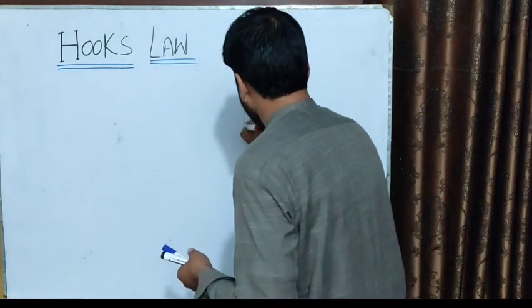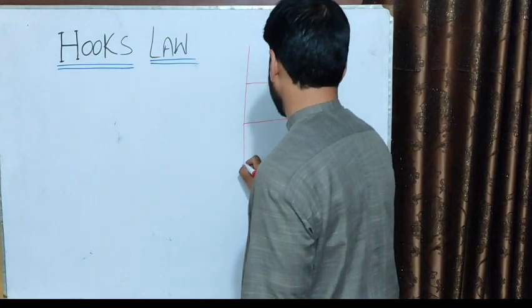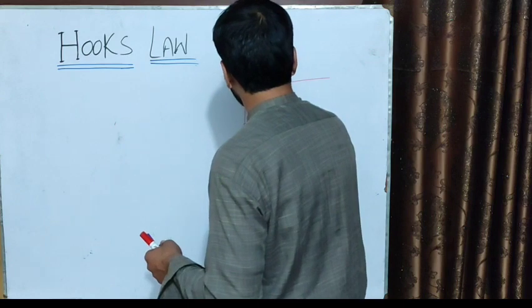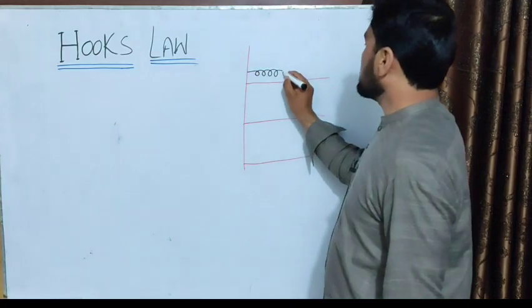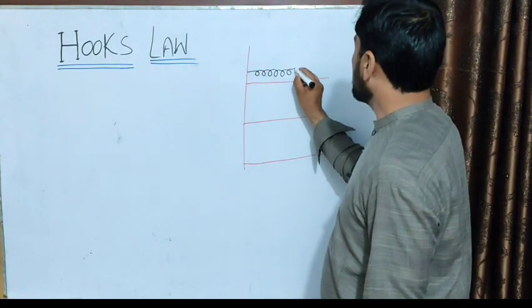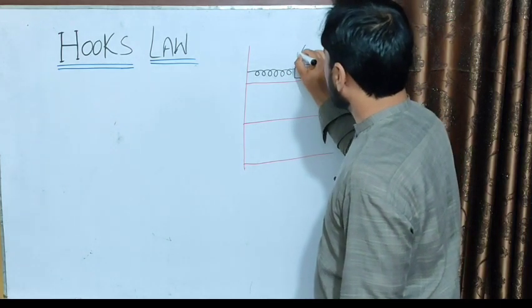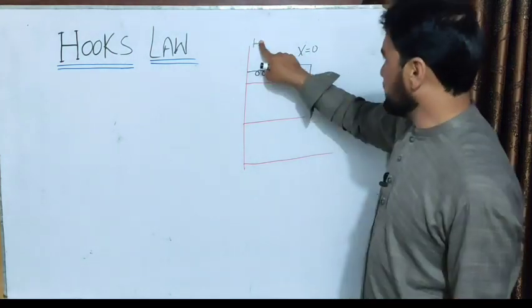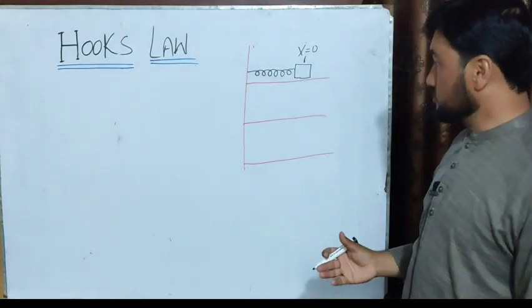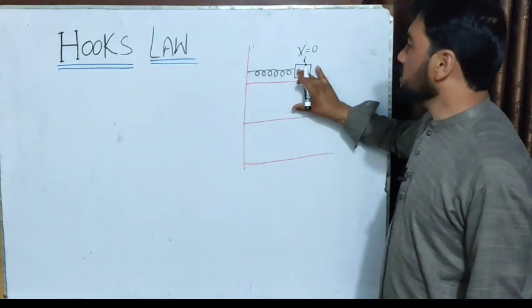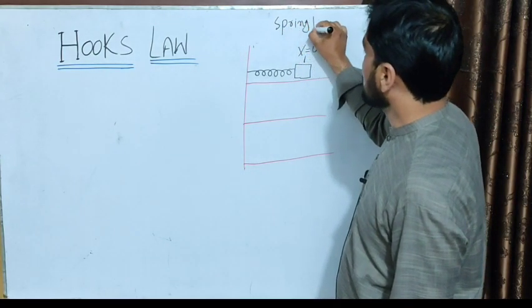Let's take a spring example. There's a support from which a spring is hanging. The spring is attached here. This spring is in its normal position, and we attach an object to it. This is the x position, where x equals 0 is the main reference position. This is called a spring mass system.